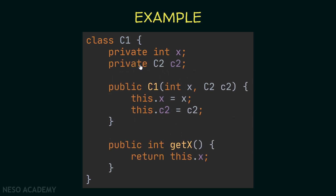Now let's modify the C1 class. I added a private attribute of type C2 called c2, and modified the constructor accordingly. The constructor now receives two arguments: an integer and an object of type C2, assigning both attributes. We have a getter for x, but we don't have a getter for the C2 attribute. All data fields are private, there are no setters, and since there is no getter for the C2 object, the third rule is satisfied — so C1 is still immutable.